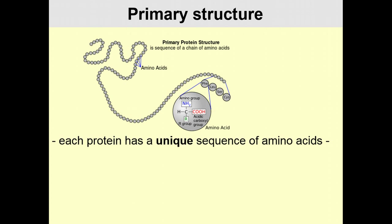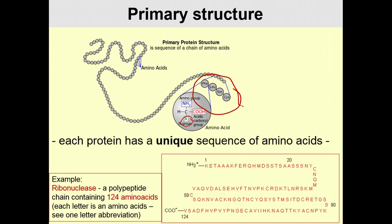Primary structure is simply the sequence of amino acids. Here we have four amino acids in a row: cysteine, serine, leucine, and phenylalanine, each with its R group, all held together by peptide bonds. An example is ribonuclease, a polypeptide chain containing 124 amino acids, represented by one-letter codes.